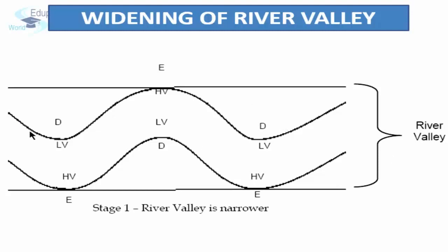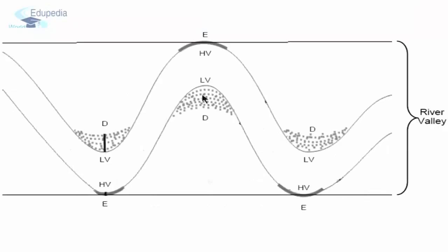Over a period of time, the river valley gets wider and wider. This happens because as the river flows through loops, the outer bank has more erosion due to higher velocity, which causes these ends to extend outwards. As this happens over a long period of time, the width of the river valley increases.